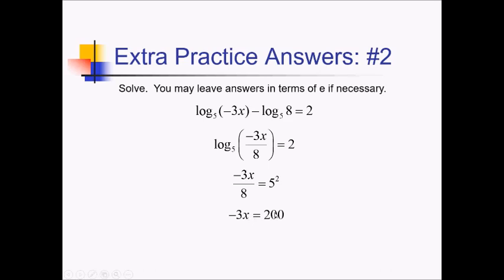x is going to be negative 200 thirds. Now let's just make sure that doesn't give us zero or undefined: if I plug a negative into this log expression here, it becomes a positive after I multiply it by negative 3. So that's okay. And then this 8 is just a constant, so that's also fine. So this answer is going to end up working for us.